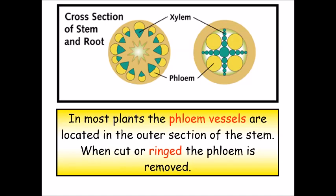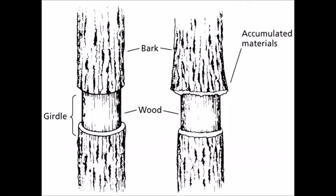And there's some experiments people have done to try and prove the mass flow theory. One of them is this girdling here where you ring the tree cutting deep into it so you actually go into the phloem, and what happens is over time the top of the cut there starts to bulge as material starts to build up and when that material is examined it was found to contain starch.